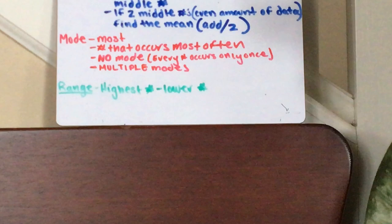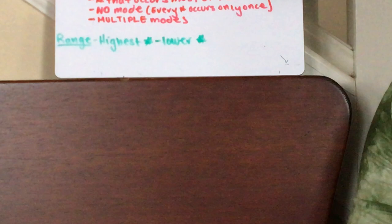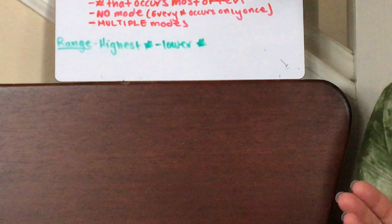And then last but not least is the range. The range of the numbers is the highest number in the data set minus the lowest number in the data set.